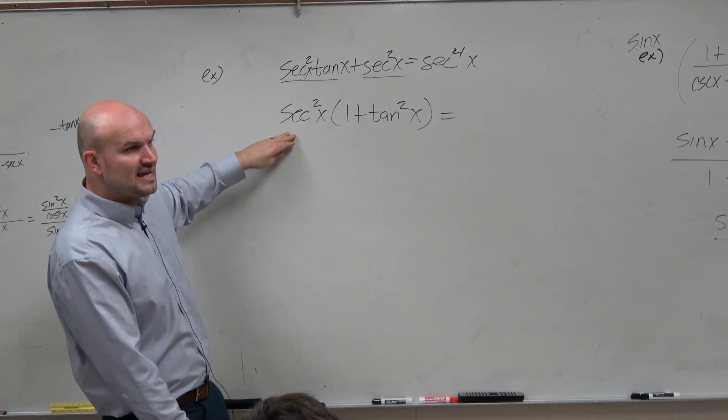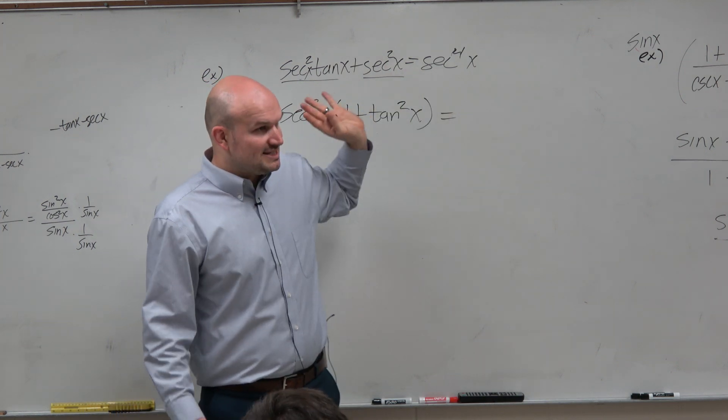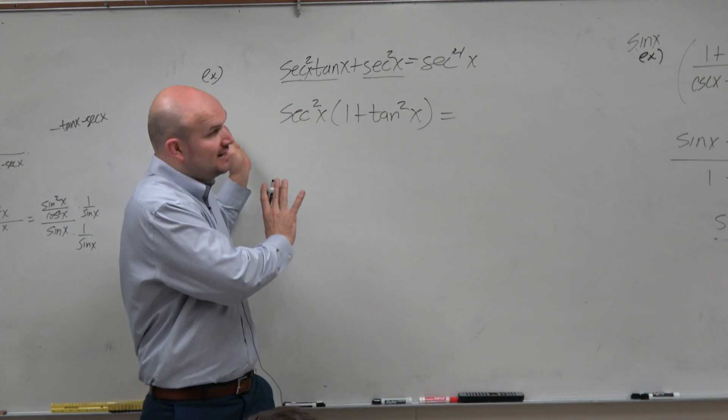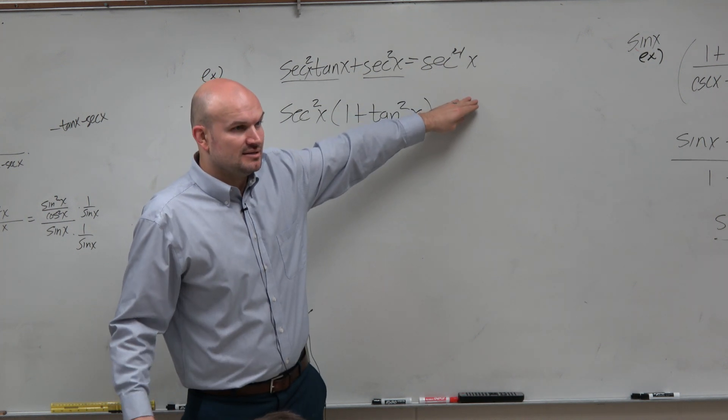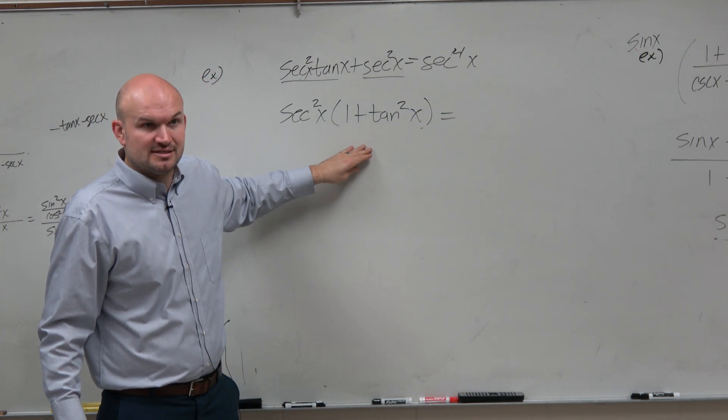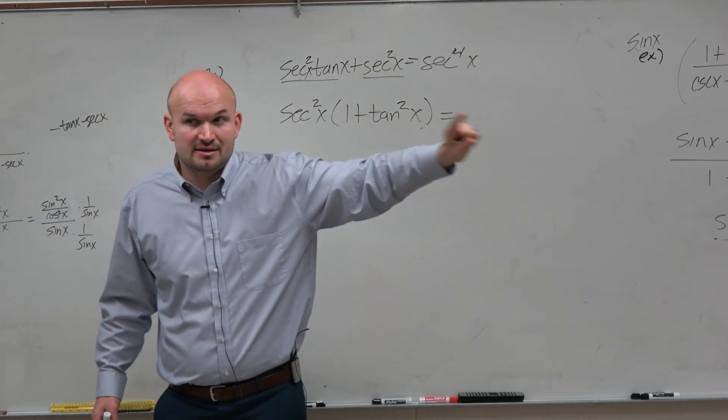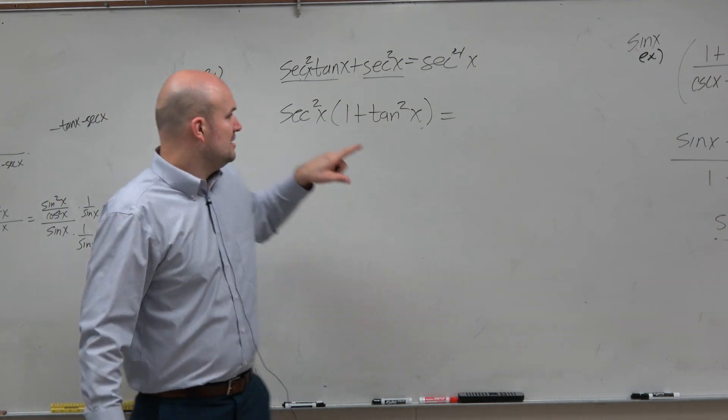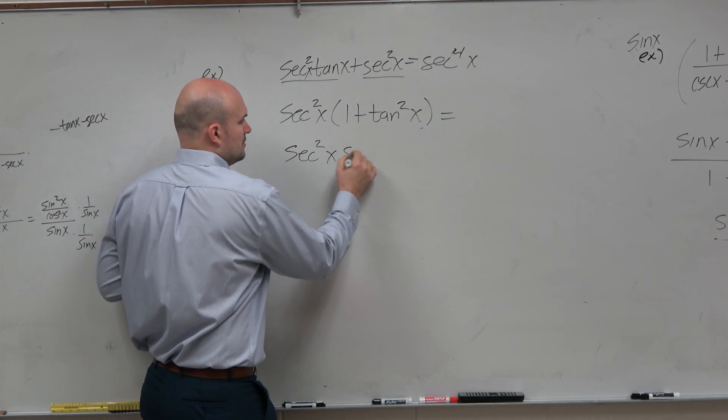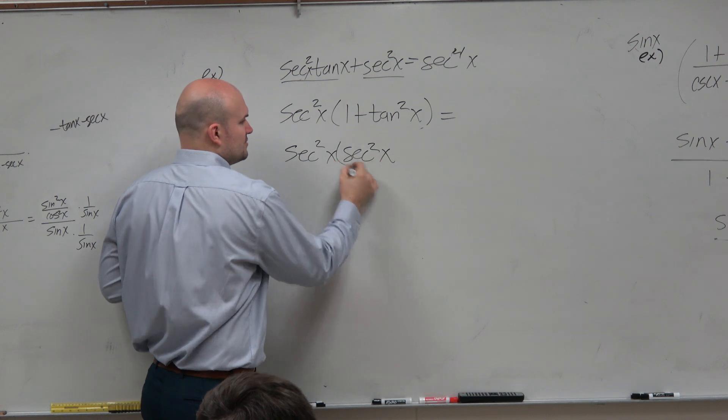Now again, I don't want to convert secant into tangent because the right side is secant. I want this left side to only be in terms of secant. So it makes sense for me to convert my tangent into secant, which I know they are connected because of the Pythagorean identities. 1 plus tangent squared is just equal to secant squared of x.